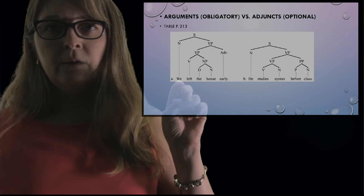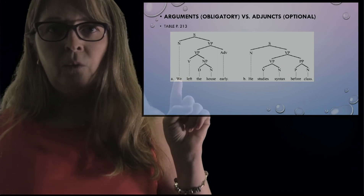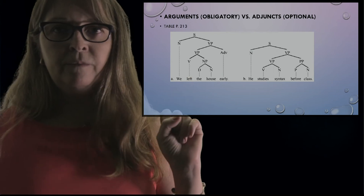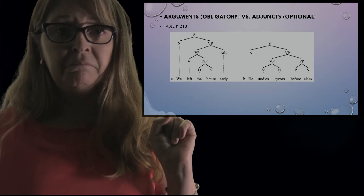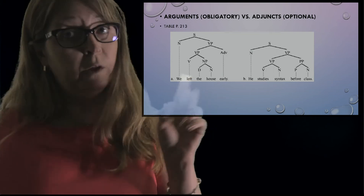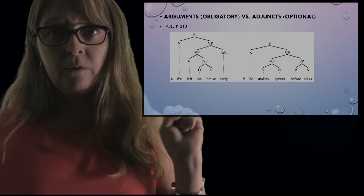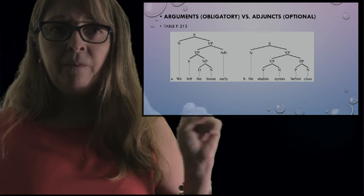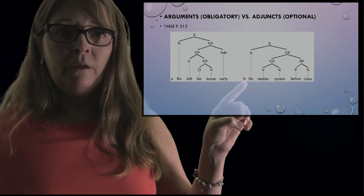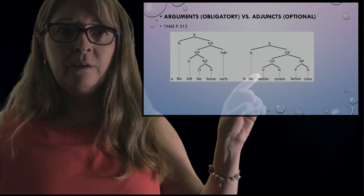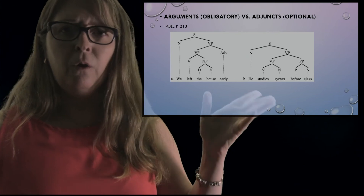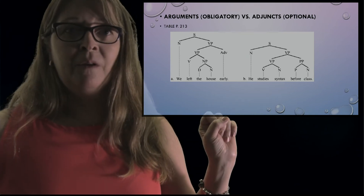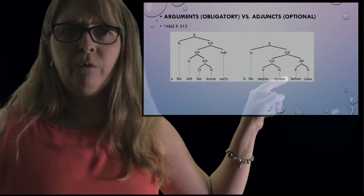The arguments would be 'we left' — what did you leave? The house. When? Early. Those additional details are optional adjuncts. Another example: 'He studies.' What is he studying? Syntax. When? Before class. Those are optional adjuncts.